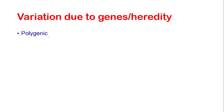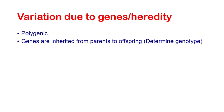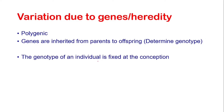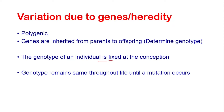Firstly, we will see the variation which is due to genes or heredity. As you know, quantitative traits are polygenic, which means they are controlled by a large number of genes, and all of these genes contribute to the phenotype of these quantitative traits. These genes might be responsible for causing variation in these traits. The important thing about genes is that they are inherited from parents to offspring and determine the genotype or genetic makeup of an individual. The genotype becomes fixed at the time of conception and remains constant throughout the life of an individual.